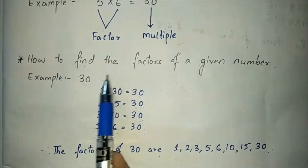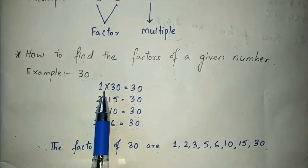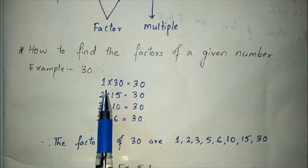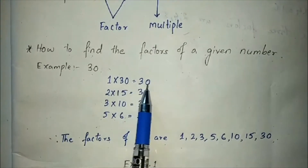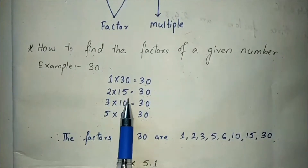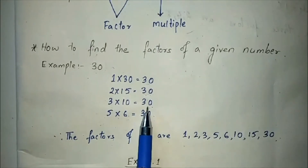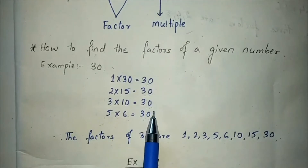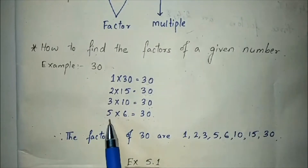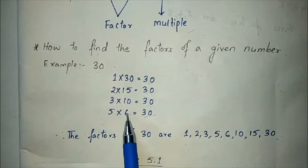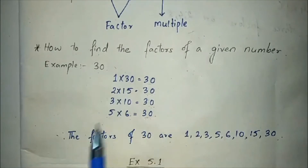Now let us see how to find the factors of a given number. Let us take the example of 30. You have to think of any 2 numbers which when multiplied give the product 30. 1×30=30, 2×15=30, 3×10=30. Is there any number which when multiplied with 4 gives 30? No. Next, 5×6=30, and 6×5=30 and so on. So these are the possible factors of 30.